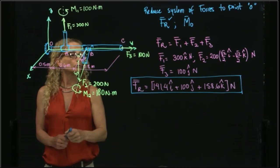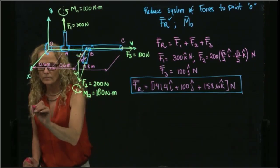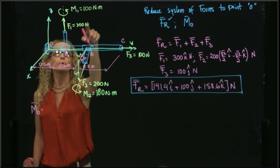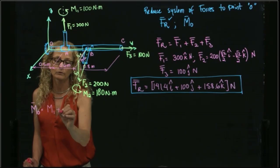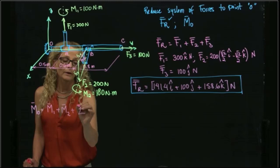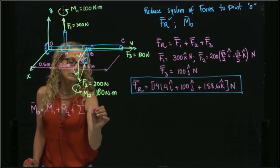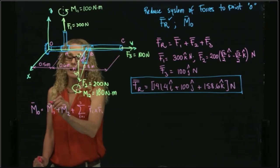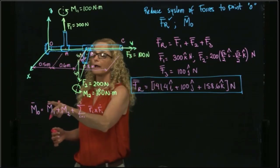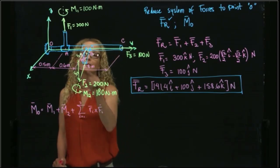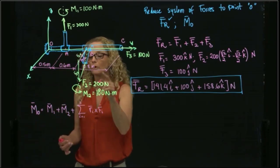The moment with respect to O will be equal to adding all the moments that I have, so it will be M1 plus M2 plus r_i cross F_i from i equals 1, in this case, to 3, like I have three forces. So I have to find, in terms of these components, M1, M2, and find the moment that produces each of these forces with respect to O. So let's do one by one.